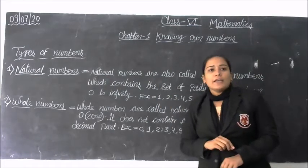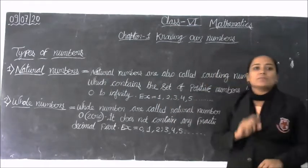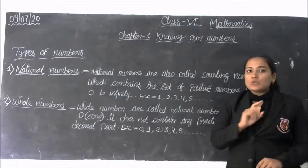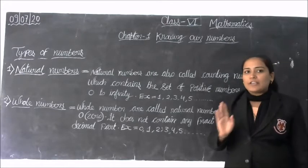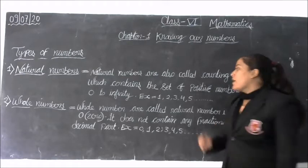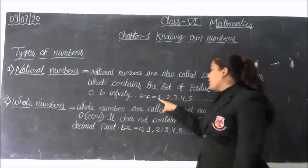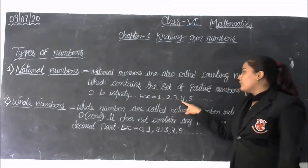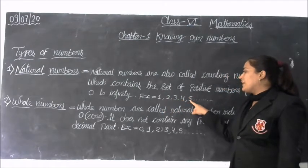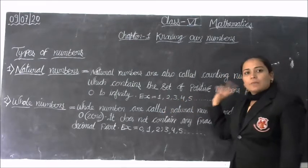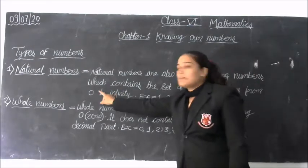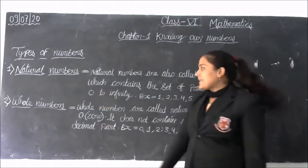Natural numbers cannot be negative. Minus 1, minus 2 are not natural numbers. But 1, 2, 3, 4, 5 and others are natural numbers.